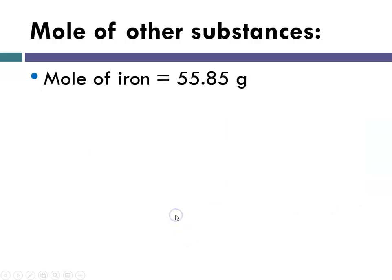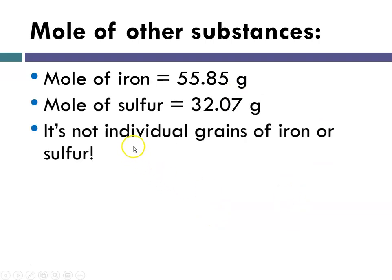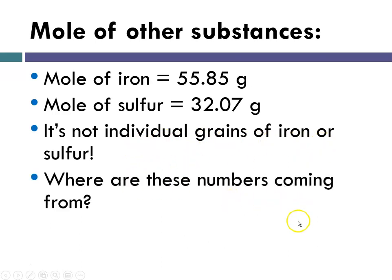Mole of other substances. A mole of iron is 55.85 grams. A mole of sulfur is 32.07. It's not just individual grains of iron or sulfur. Where are these numbers coming from? So it turns out these numbers are coming from the periodic table. These numbers right here, I'm reading them off the periodic table.